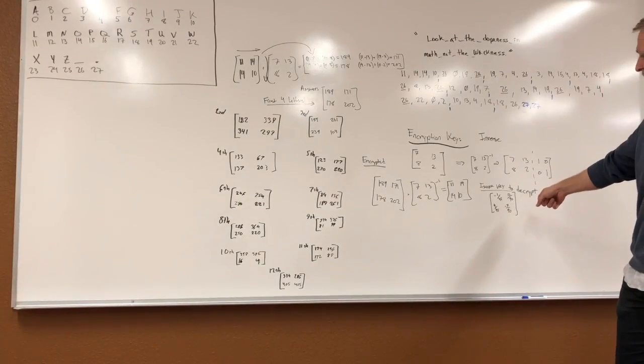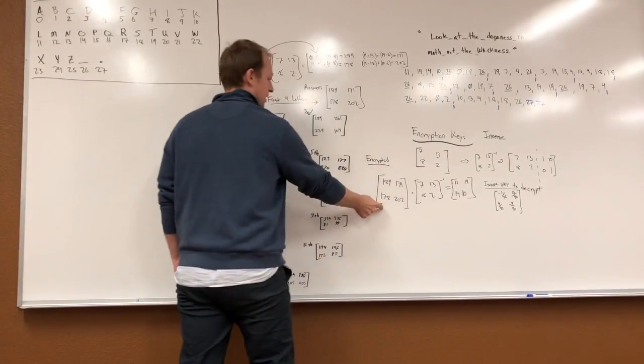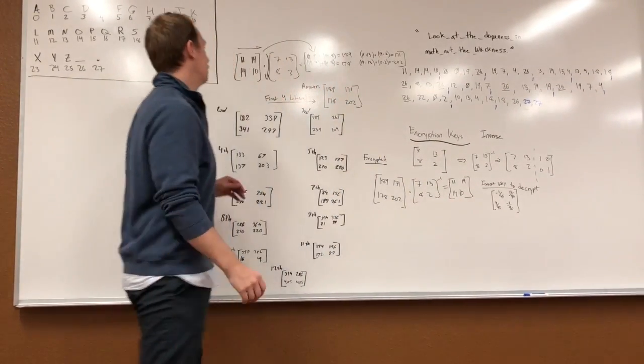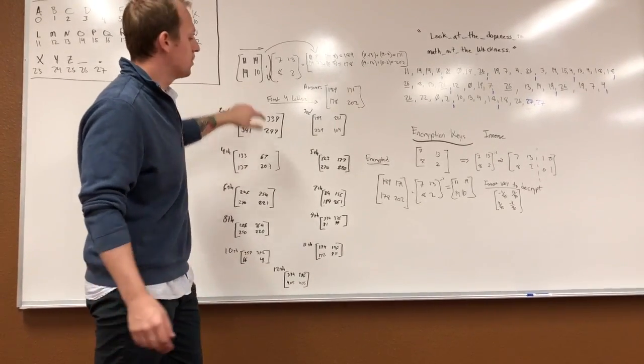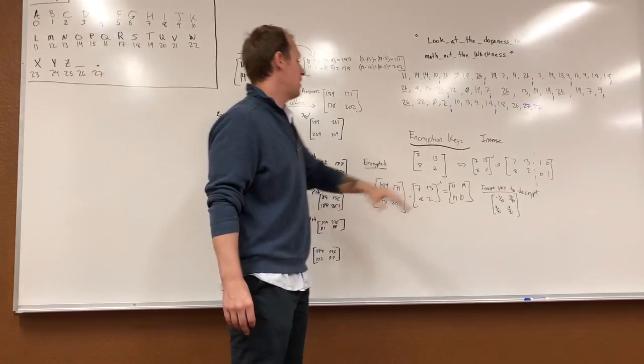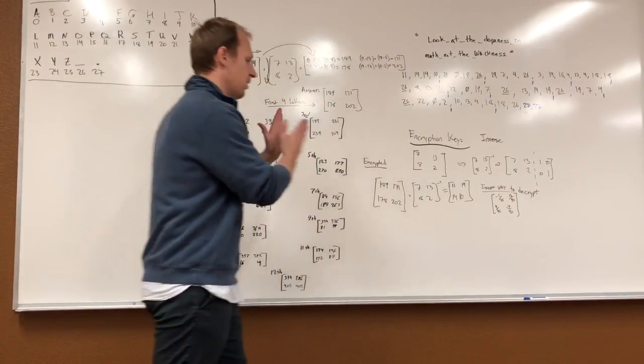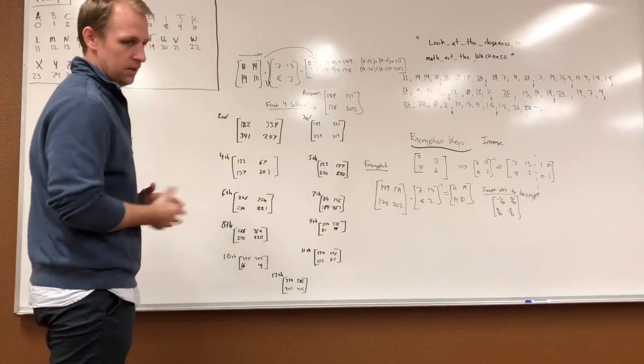So now we can take this inverse key and multiply it by the encrypted message, and we get the first four letters that we originally encrypted back at the beginning: Look. So that's the basic way it is. And you would go through and do this for each and every block, decrypting it with the inverse. And then you could reassemble that message using the key and it would be decrypted.